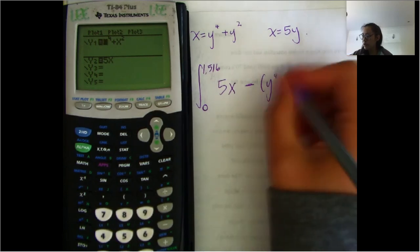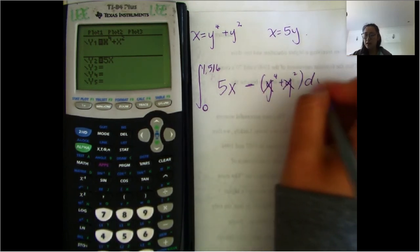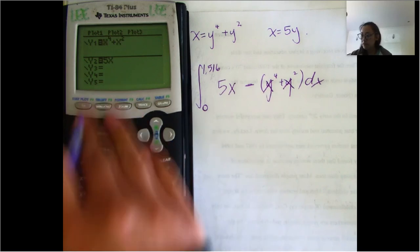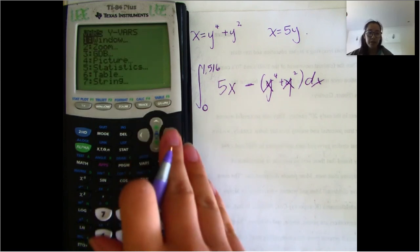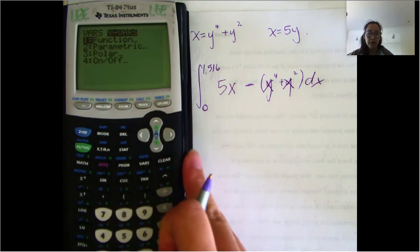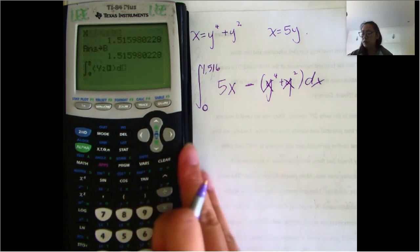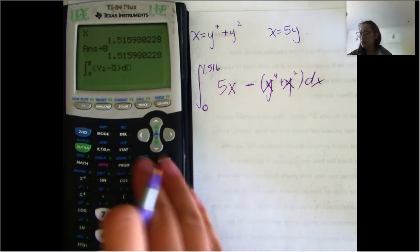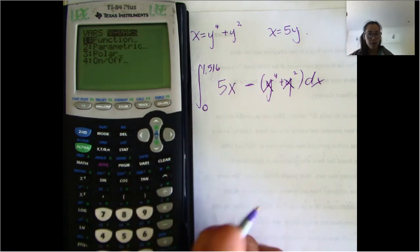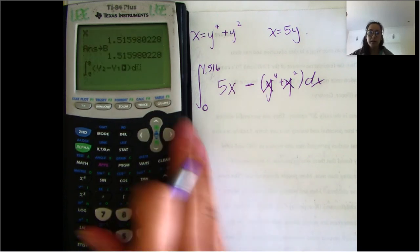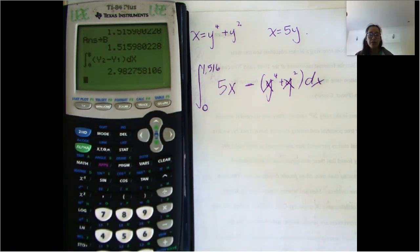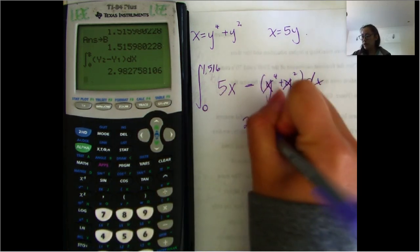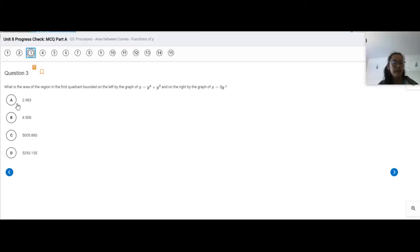These should be the same variables. So we put y2 — that's 5x — minus y1, which is x to the fourth plus x squared. So y2 minus y1 dx. That gets you 2.983. Your answer is 2.983, which is answer choice A.